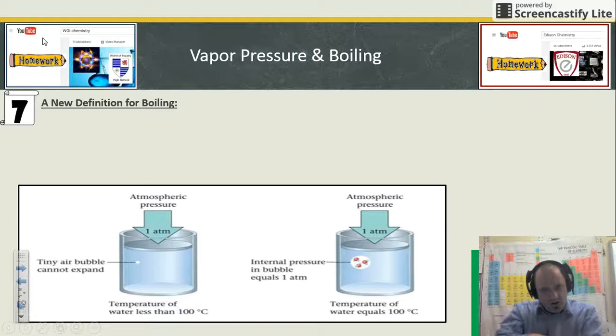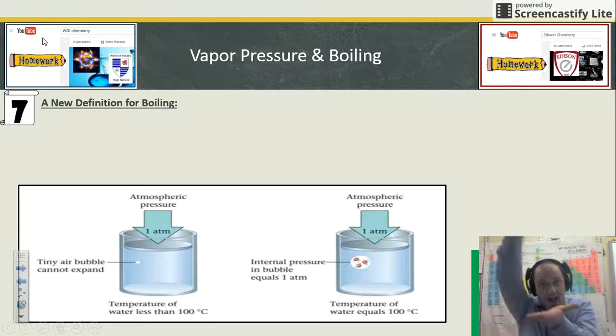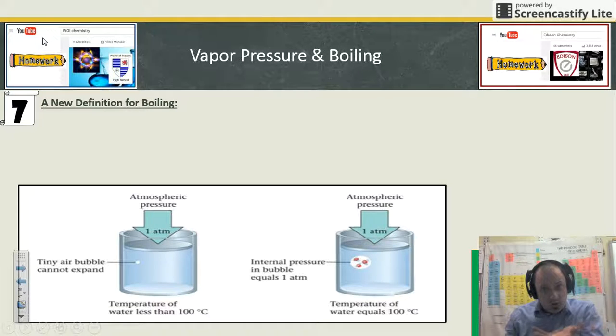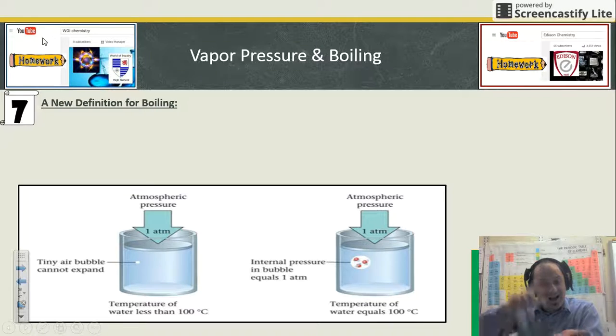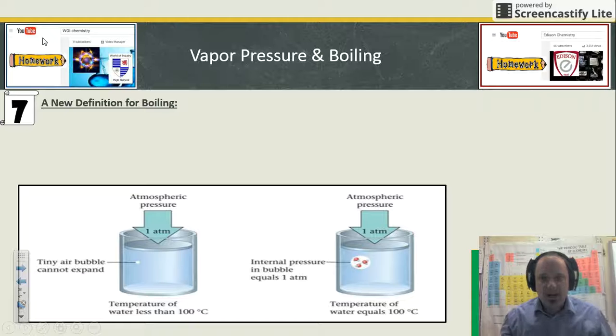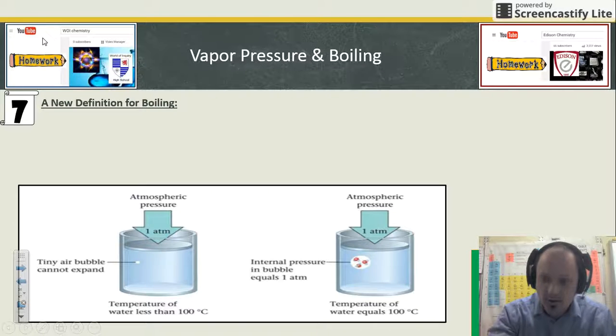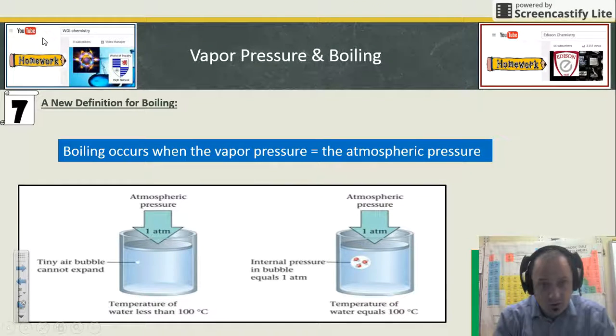Boiling and vapor pressure is a push-me-pull-you scenario. The hotter the liquid gets, the greater vapor pressure it pushes up on the atmosphere. When the liquid's heat gets high enough to exert more pressure than the atmosphere pushing down, it will burst into a gas—and that's what we call boiling.